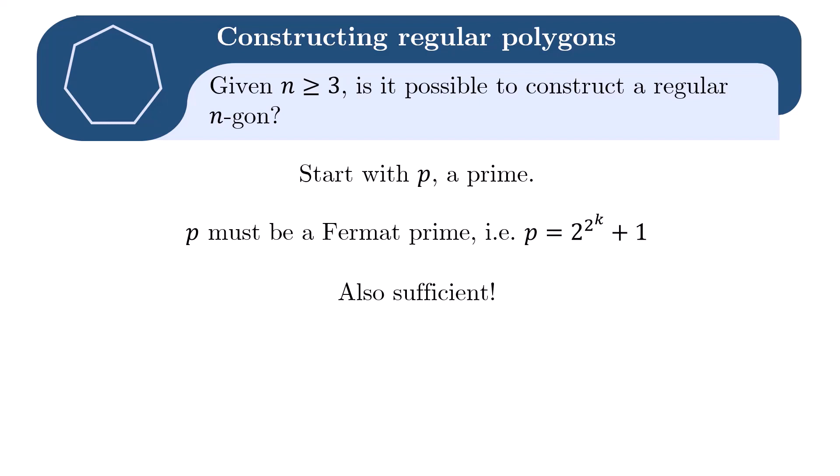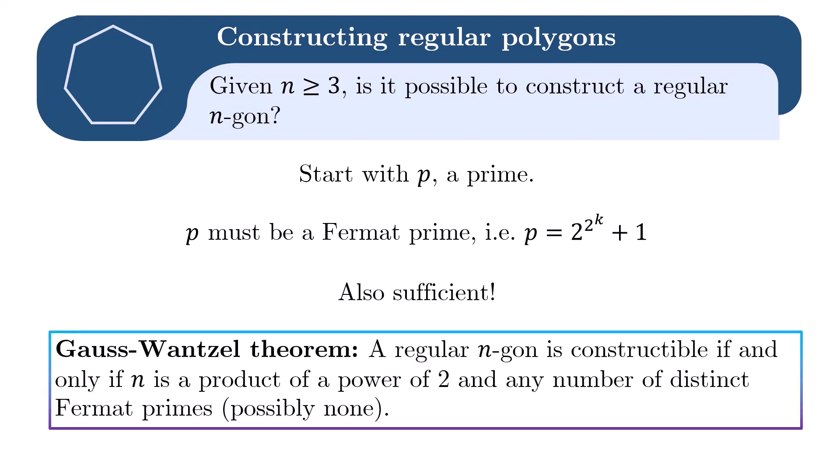For general n, there is a well-known result, known as the Gauss-Wantzel theorem, which characterizes the value of n for which it is possible to construct a regular n-gon. A regular n-gon is constructible if and only if n is a product of a power of 2 and any number of distinct Fermat primes.